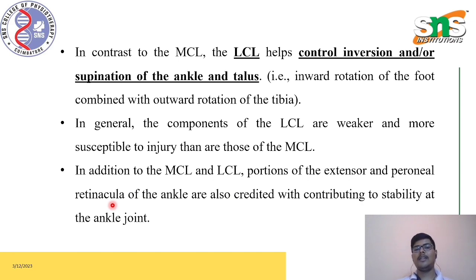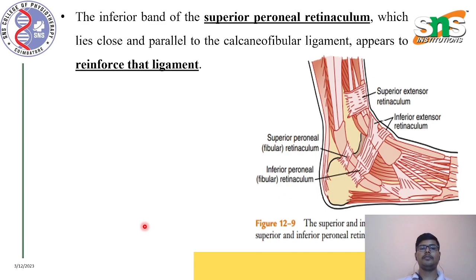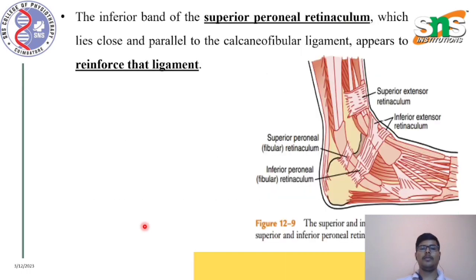The inferior band of the superior peroneal retinaculum, which lies close and parallel to the calcaneofibular ligament, appears to reinforce the ligament structures and provide additional stability to the talocrural or ankle joint.